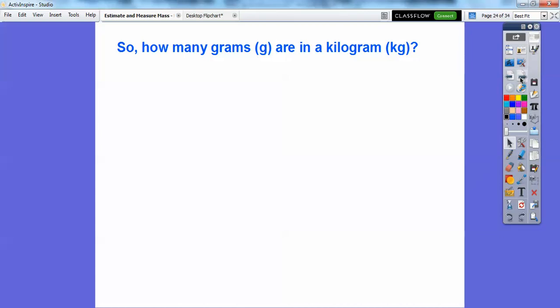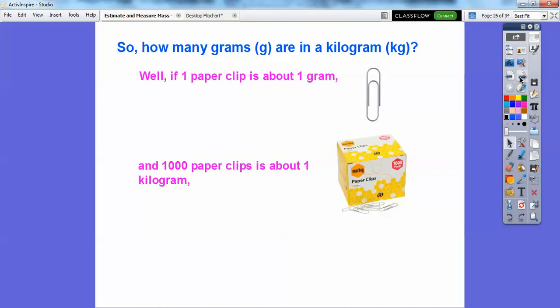So how many grams are there in a kilogram? Well, if one paper clip is about one gram and a thousand paper clips is about one kilogram, then that means there are a thousand grams in one kilogram.